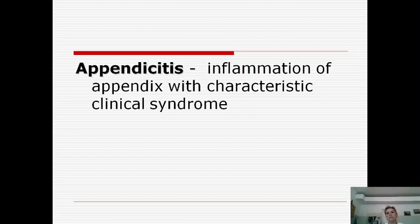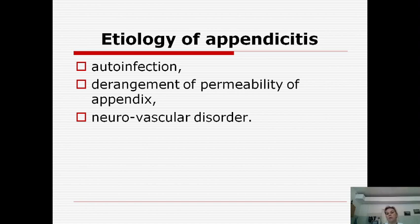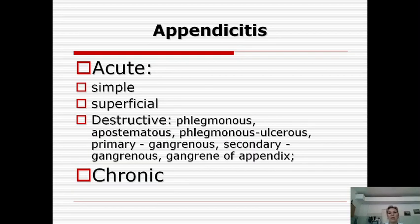The next disease of the gastrointestinal tract is appendicitis — inflammation of the appendix with a characteristic clinical syndrome. Etiological factors include auto-infection, derangement of permeability of the appendix, and neurovascular disorders. There are two main groups: acute and chronic — with acute form being more common. There are three main stages of acute appendicitis: first, simple appendicitis, where we see only derangement of blood circulation and edema without leukocyte infiltration.